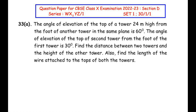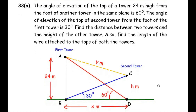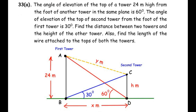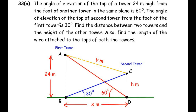Let us understand this question by drawing a figure first. Remember that the figure carries one mark in these kind of questions, so draw it as neatly as possible. There are two towers — the first tower is labeled AB and the second tower is CD. The height of the first tower is 24 meters. We need to find three things: the distance between the two towers (X meters), the height of the second tower (H meters), and the distance between the tops of the two towers (Y meters).